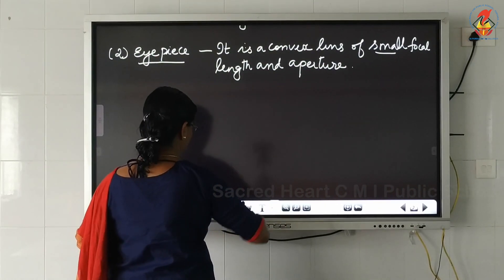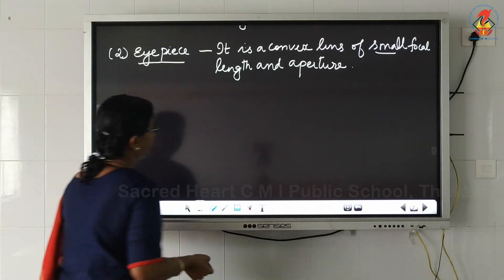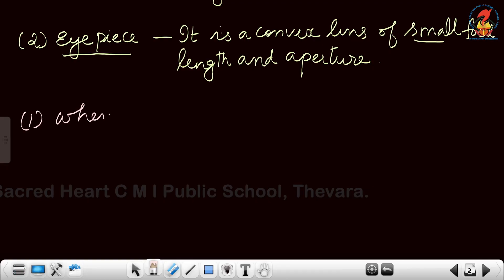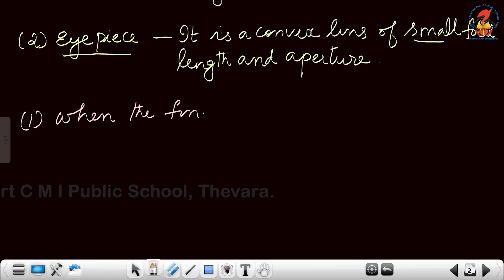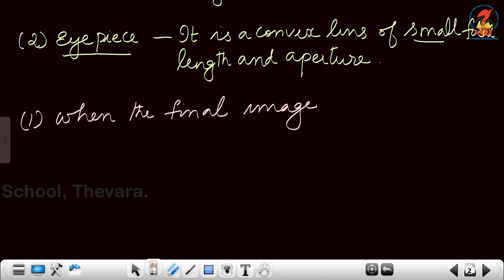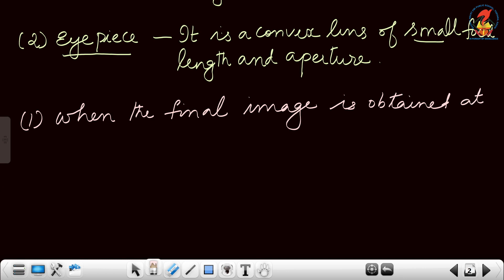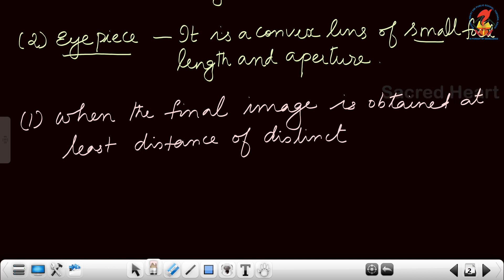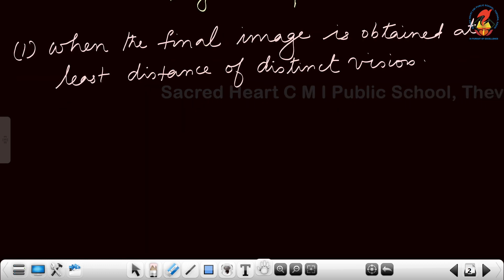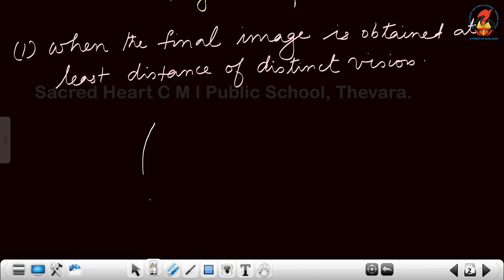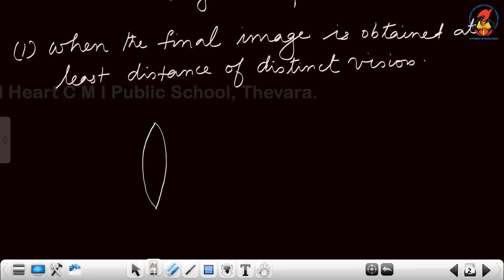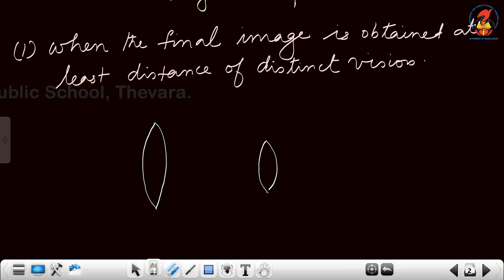Now we are going to study the case in which the final image is obtained at the least distance of distinct vision. When the final image is obtained at the least distance of distinct vision, we require two convex lenses — one with a larger aperture and a second one with a comparatively small aperture.